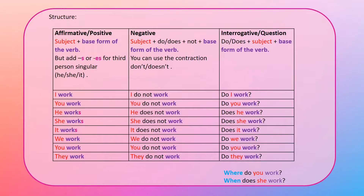For interrogative or question sentences, the pattern is: do or does plus subject plus the base form of the verb. For example: Do I work? Do you work? Does he work? Does she work? Does it work? Do we work? Do they work? If you need to add a question word like when, where, or why, just add it at the beginning before do or does — for example: 'Where do you work?' and 'When does she work?'